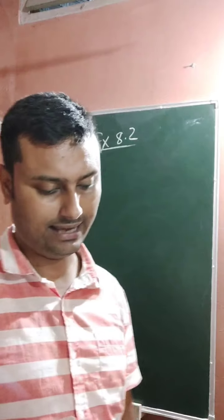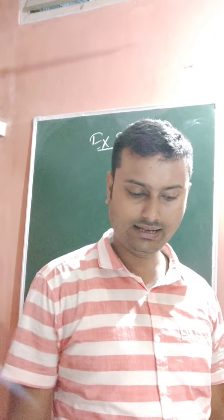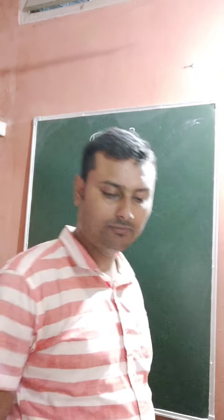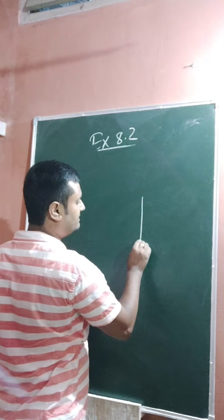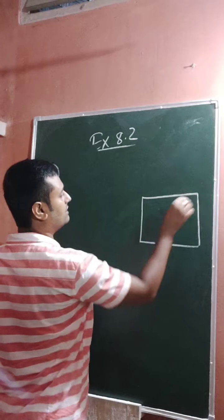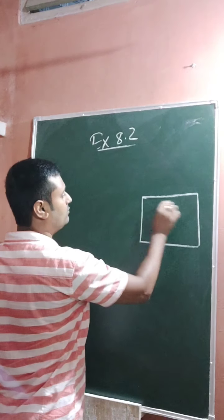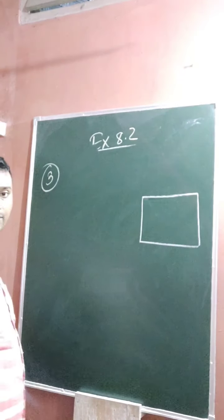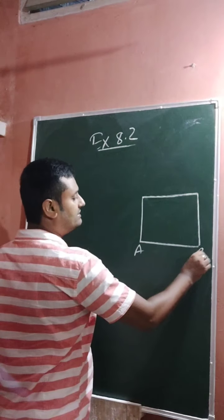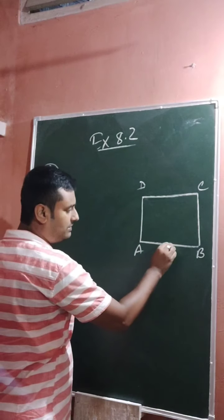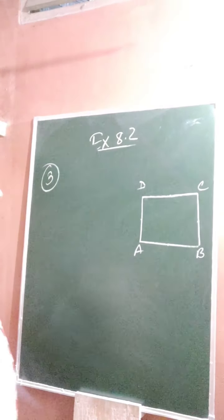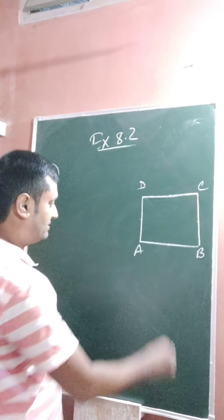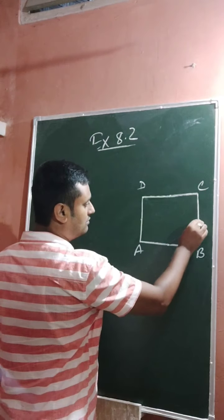Question number three: ABCD is a rectangle, and P, Q, R, and S are the midpoints of the sides AB, BC, CD, and DA respectively. We have to prove that the quadrilateral PQRS is a rhombus. That means we have to join and show that PQRS forms a rhombus.